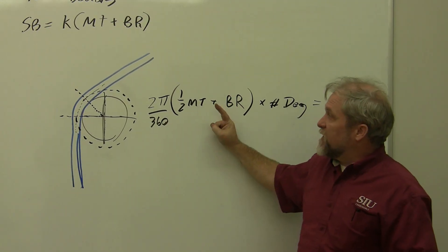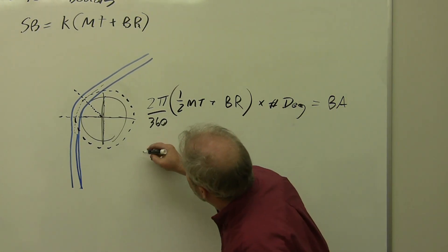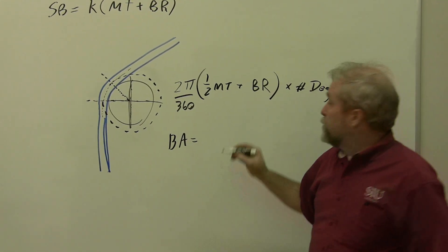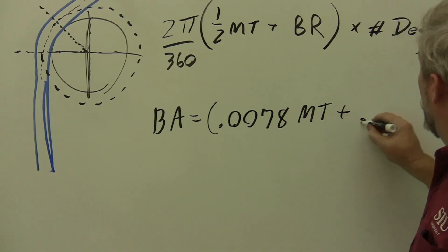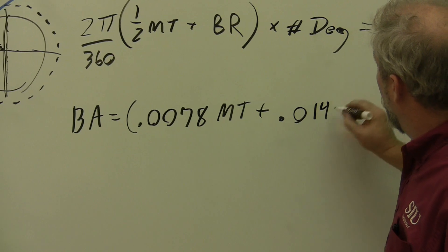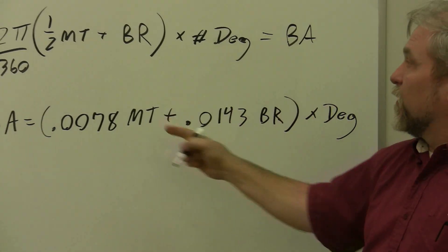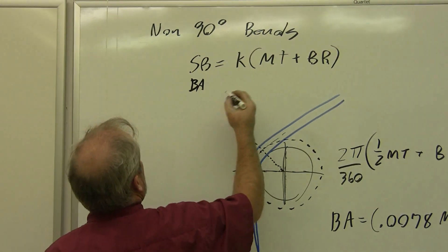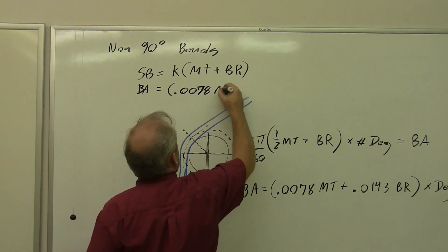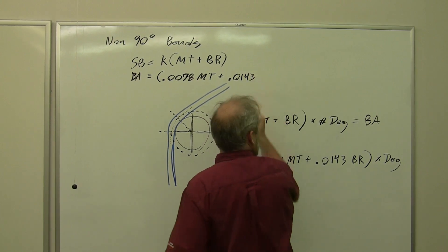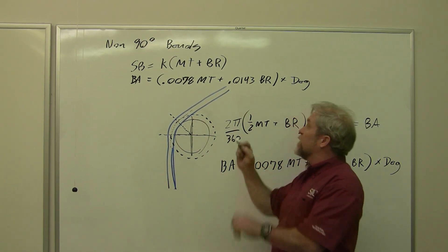We're going to simplify this. We're not going to use one half the material thickness; we're going to use the actual amount. Our formula is going to be: bend allowance equals 0.0078 times our material thickness plus 0.0143 times our bend radius, close parentheses, times the number of degrees. Notice that these are pretty small numbers, and that's because it doesn't take very much to sweep around each one of these degrees.